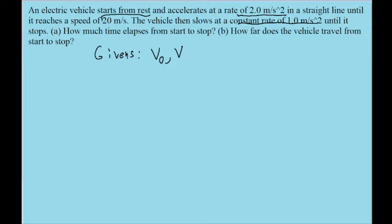And for both parts, we're given the acceleration. So v-naught, the initial velocity, the final velocity, and the acceleration are all given to us. And in part A, we want to find the time.